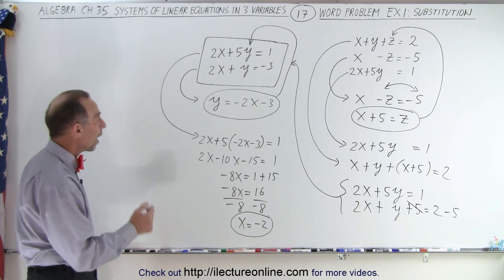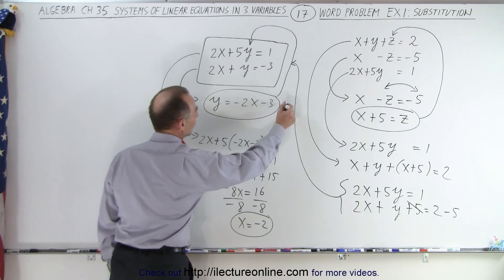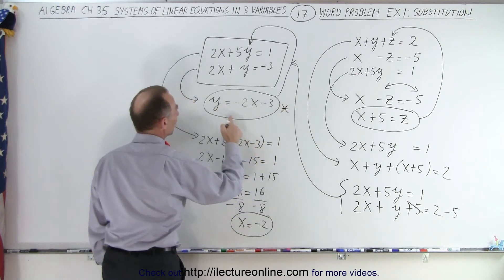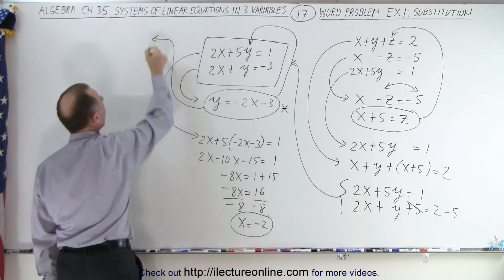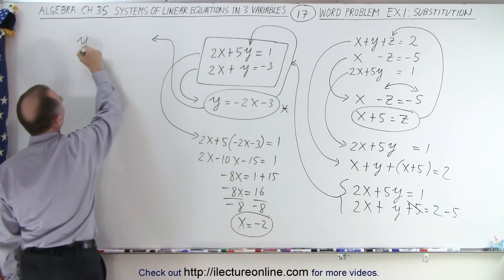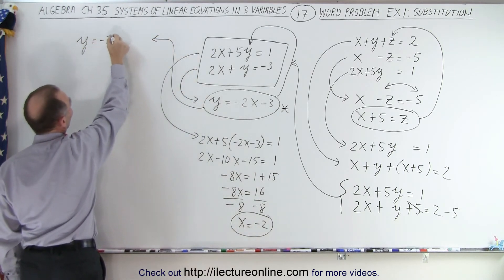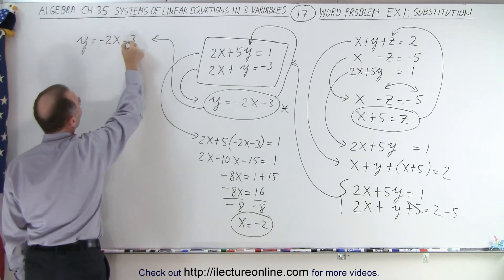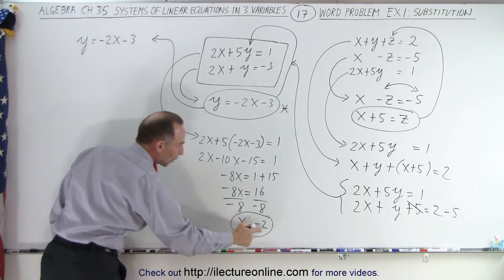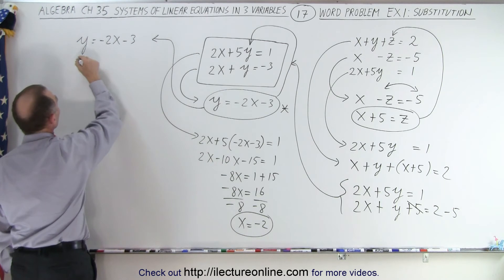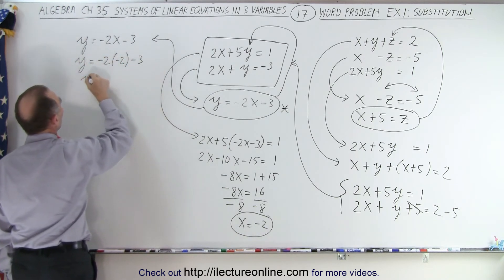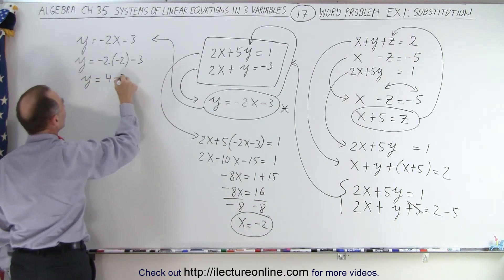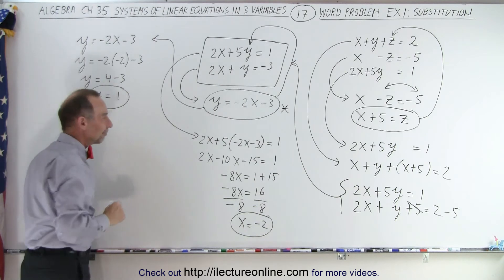We still need to find y and z. So to find y, we're going to go back to this equation right here, because y is in terms of x. So we take this equation up here, we write y is equal to minus 2x minus 3, but now we're going to replace x by what x is equal to, negative 2. So y equals negative 2 times negative 2 minus 3, y is equal to 4 minus 3, or y is equal to 1. And now we found the second variable.